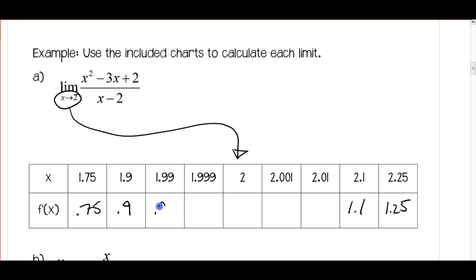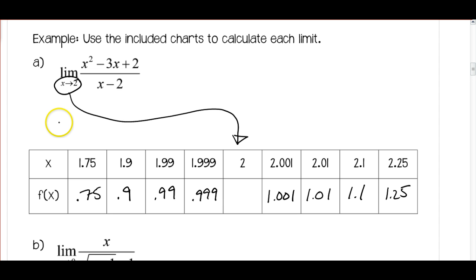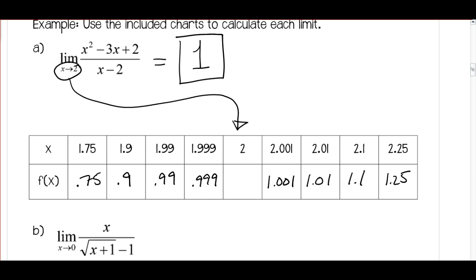At 1.99 I have 0.99, so you're probably getting a good idea of what we're approaching. At 2.01 we have 1.01; at 1.999 the value is 0.999; at 2.001 we have 1.001. We can see that the limit as x approaches 2 is getting very, very close to 1. We'll never reach 1 because at 2 there's a hole in the graph, but the limit approaches 1 from both the left and right sides.